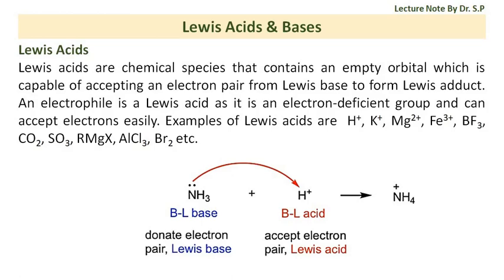Lewis acids are chemical species that contain an empty orbital which is capable of accepting an electron pair from a Lewis base to form a Lewis adduct. An electrophile is a Lewis acid, as it is an electron-deficient group and can accept electrons easily.